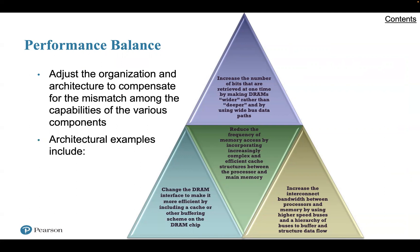The problem created by such a mismatch is particularly critical at the interface between the processor and main memory. While processor speed has grown rapidly, the speed with which data can be transferred between main memory and the processor has lagged badly. The interface between the processor and main memory is the most critical pathway in the entire computer because it carries a constant flow of program instructions and data between memory chips and the processor. If memory fails to keep pace with the processor's demands, the processor stalls in a wait state and valuable processing time is lost.